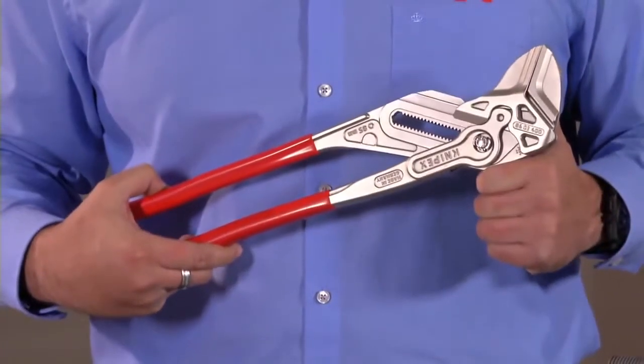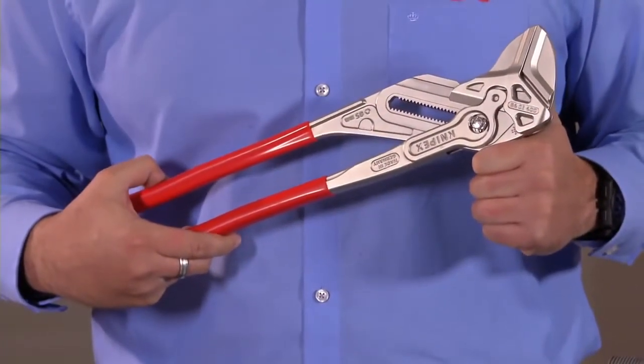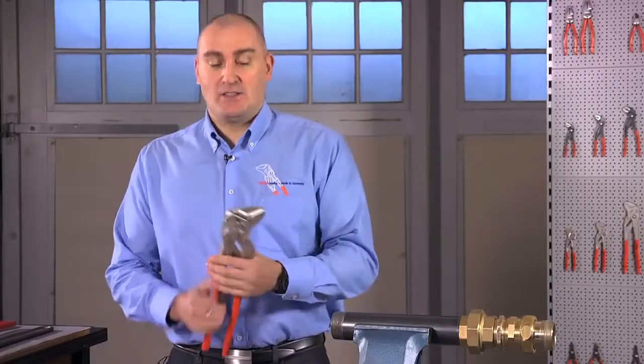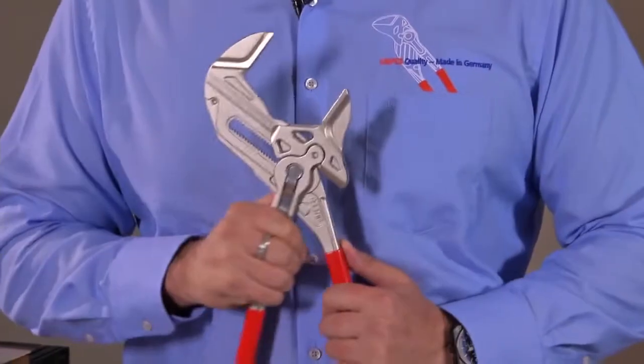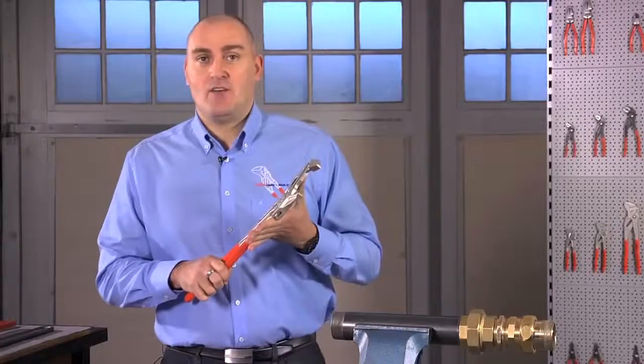Now we've released this, the 400 millimeter pliers wrench. The pliers wrench has been designed to have an opening capacity of 85 millimeters.